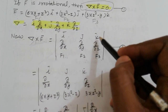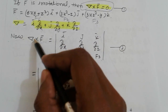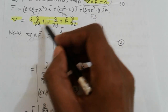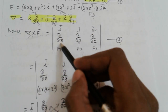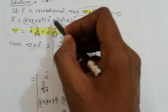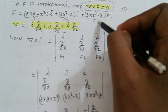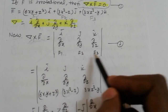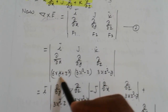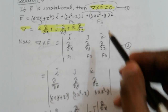Write the determinant with i, j, k in the first row. The coefficients of nabla are: i(del/del x), j(del/del y), k(del/del z). Then the components of vector F: i-coefficient is f1, j-coefficient is f2, and k-coefficient is f3. Write down the values of f1, f2, f3 from the given vector above.